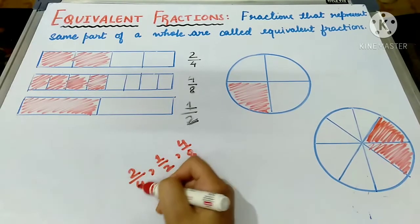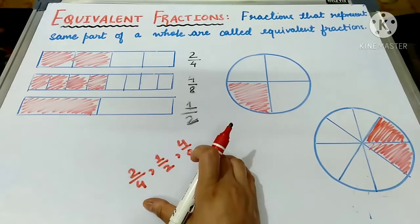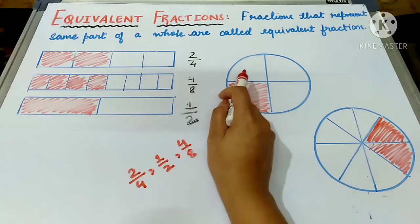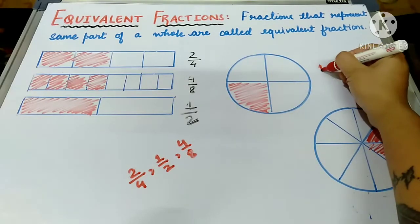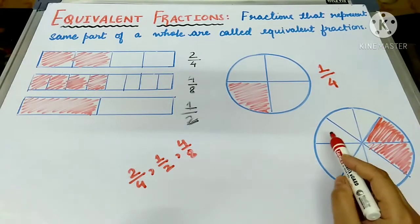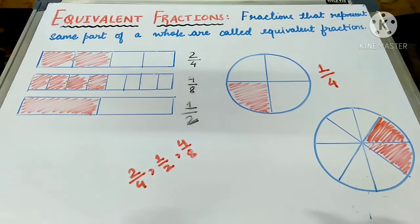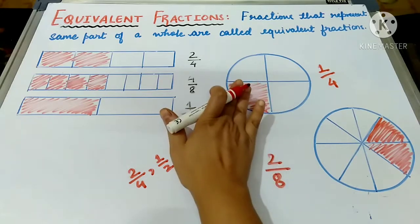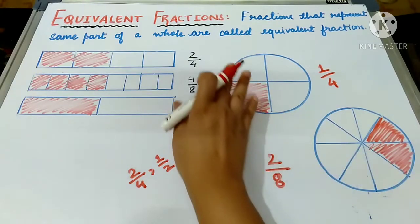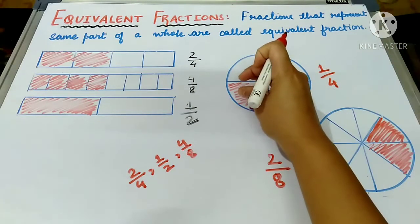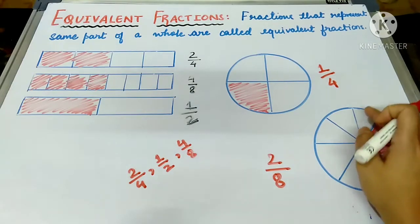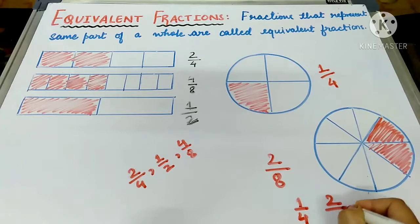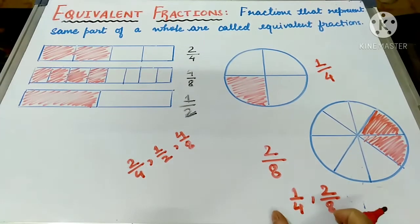When you divide these fractions by the same number, you will get the same value. Now here two circles are shown. In the first circle, only the quarter part is shaded and it is divided into four parts, so the fraction is one upon four. In the second circle, there are eight parts and two parts are shaded, so the fraction is two upon eight. We can say that the same part of the whole is shaded. Same, agar isko iske upar rakhoghe, to bilkul same part jo yaha pe shaded hai, is shaded part ko cover kar lega. So one upon four and two upon eight are equivalent fractions with equal value.